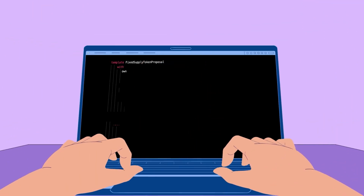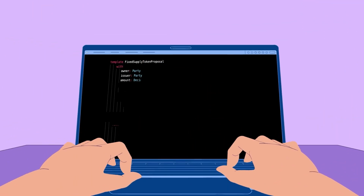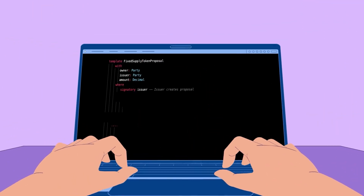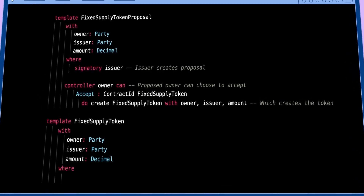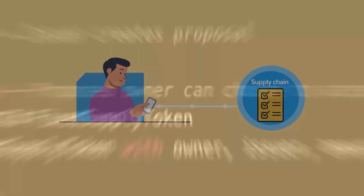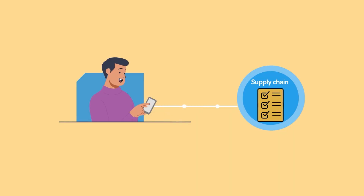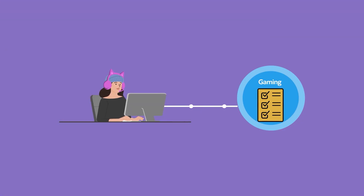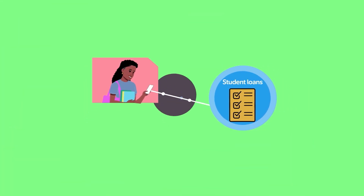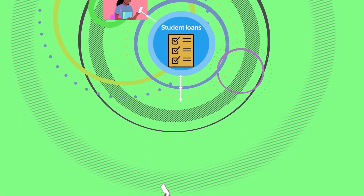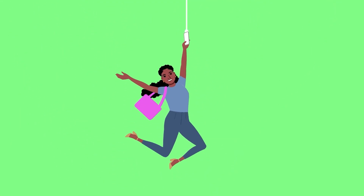However, reading a smart contract does require some understanding of computer code, which could potentially add a level of difficulty. Blockchain enthusiasts believe smart contracts have the potential to reshape industries and businesses by streamlining the sharing of information and timely automatic payments.